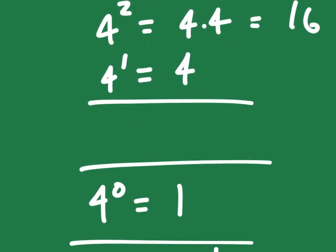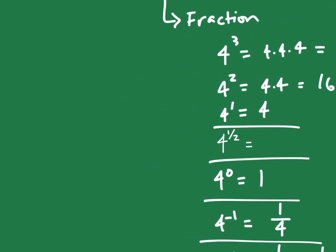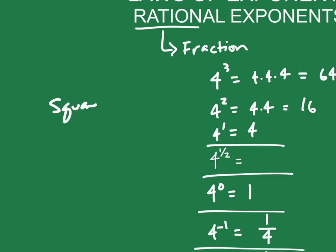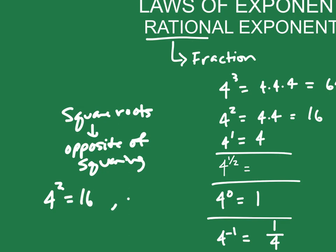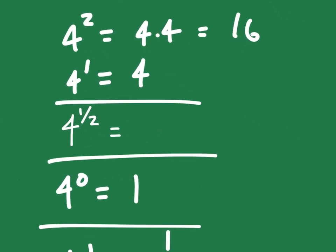So what happens if we raise four to the one-half power? What if we raise that to a fraction? One of the things that we can do is think about square roots. A square root is the opposite of squaring a number. Four squared gives us 16, so if we take the square root of 16, that brings us back to four. The square root of a number is the same thing as raising it to the one-half power. So four to the one-half is actually going to give us two.